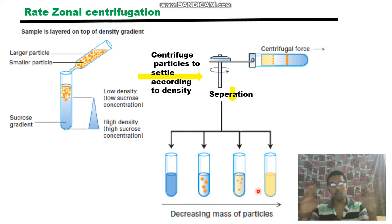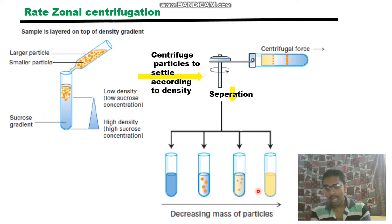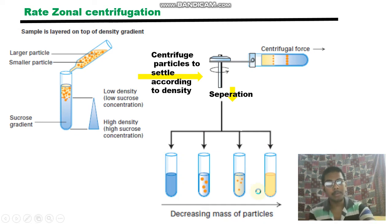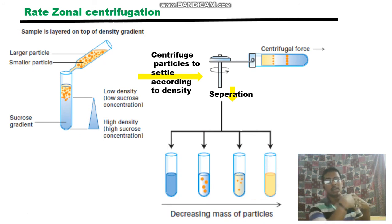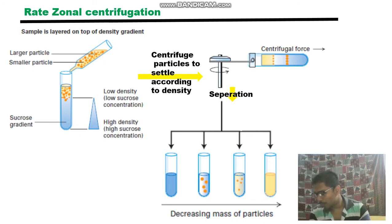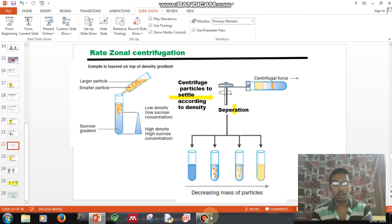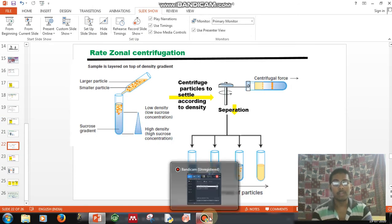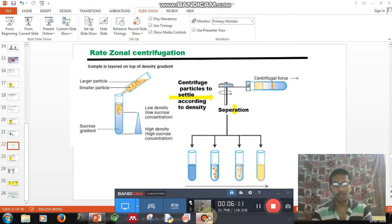All particles will eventually form a pellet if centrifuged long enough. This is because the density of the particles is greater than the density of the gradient — a fixed principle that must hold for rate-zonal centrifugation.